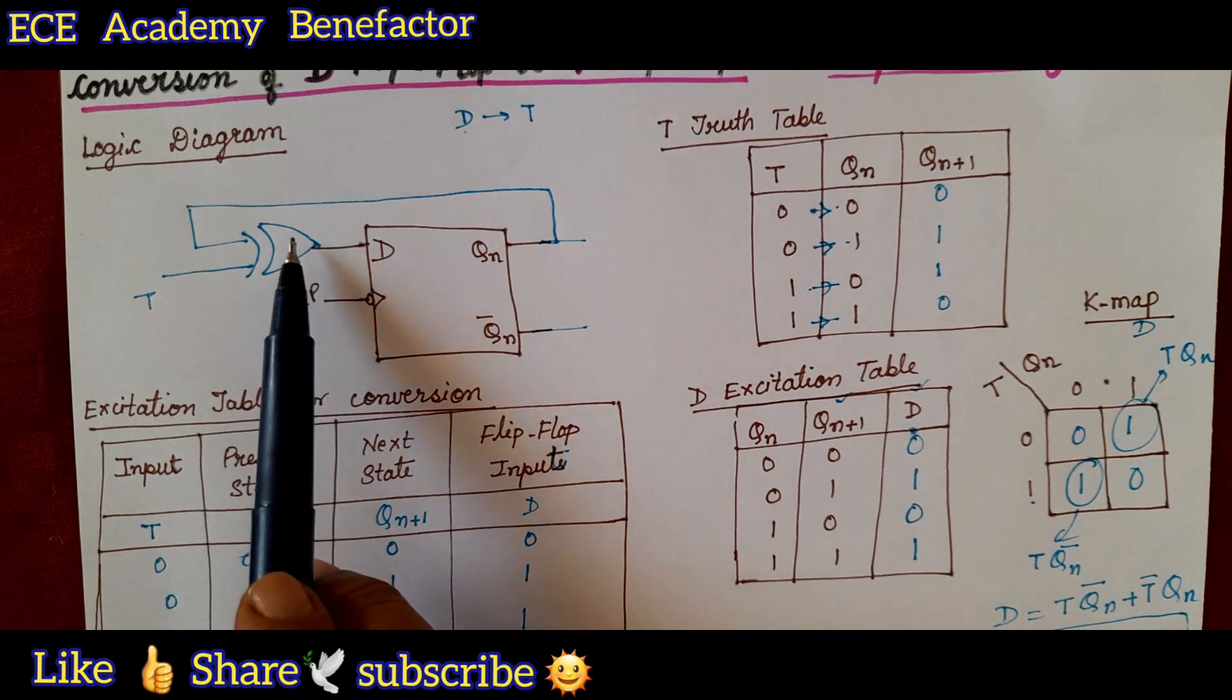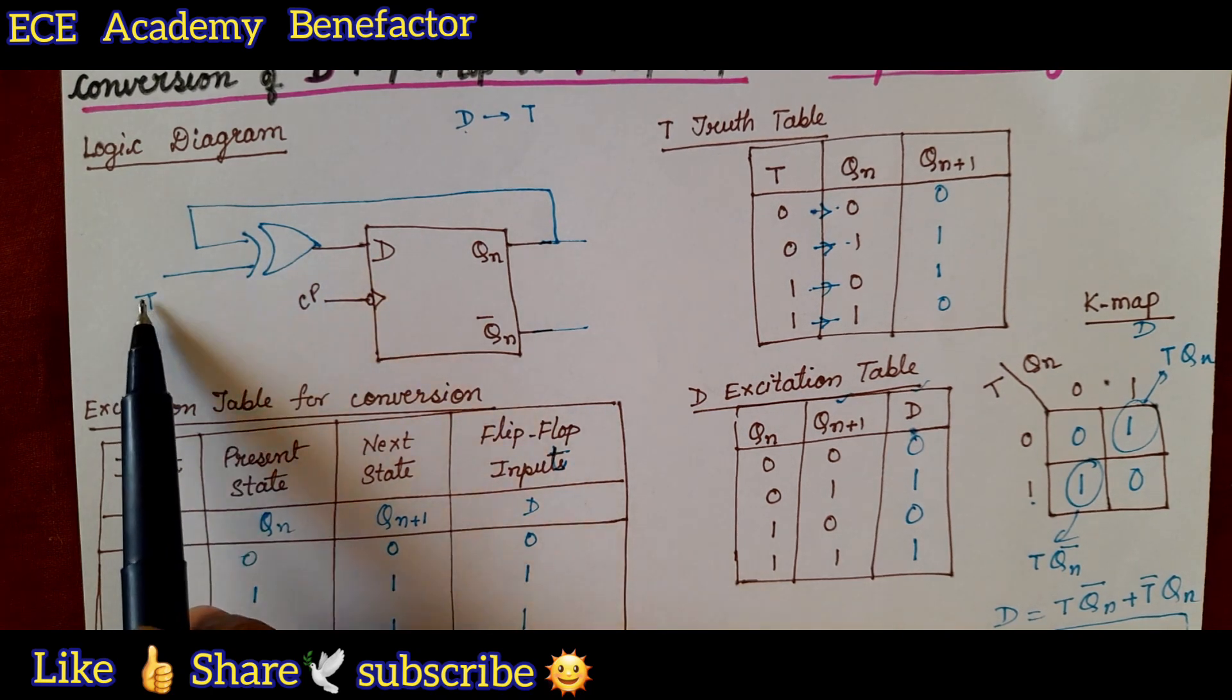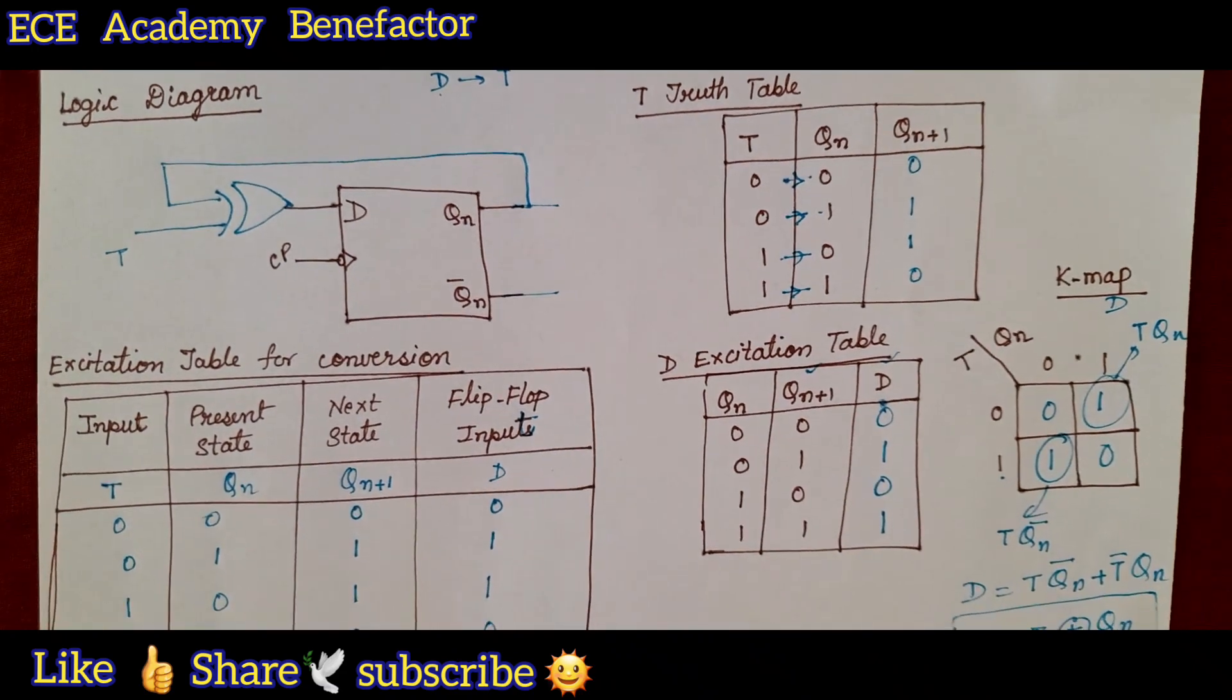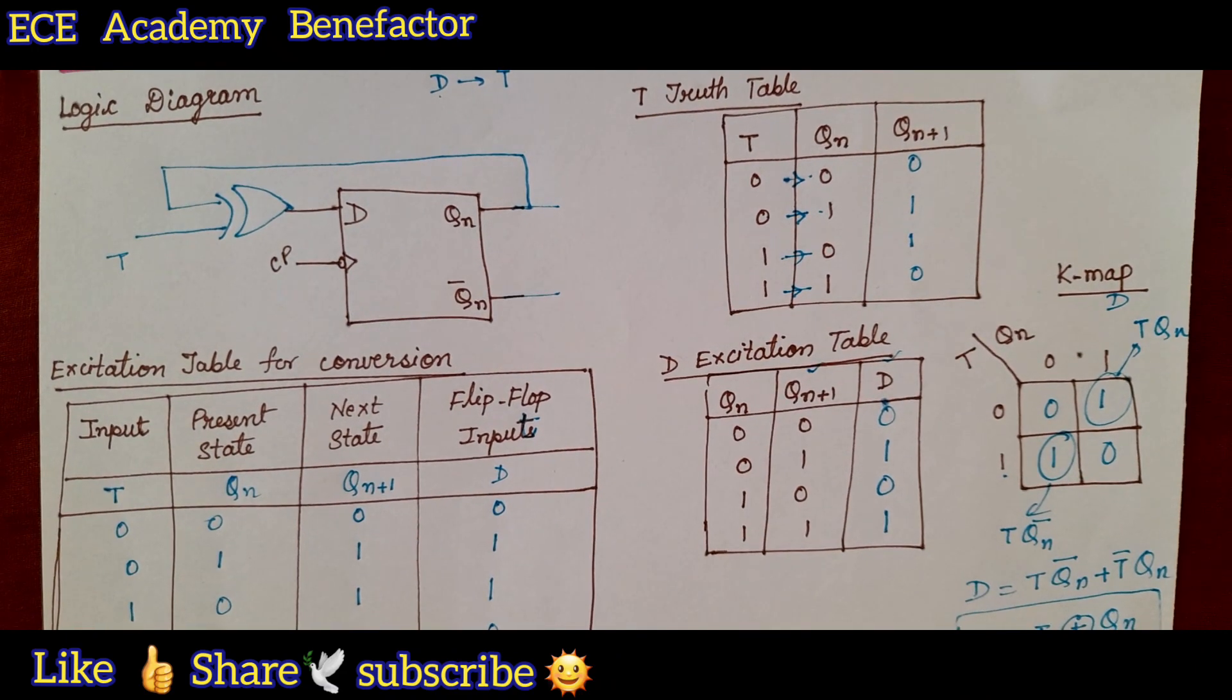At D input we have connected an XOR gate having the input T and Q n. In this way we can easily convert the D flip-flop to T flip-flop.